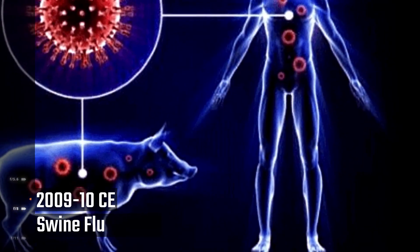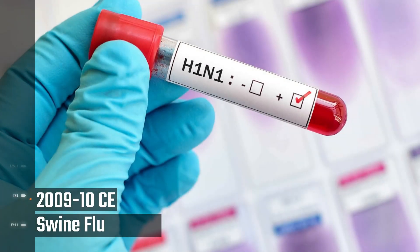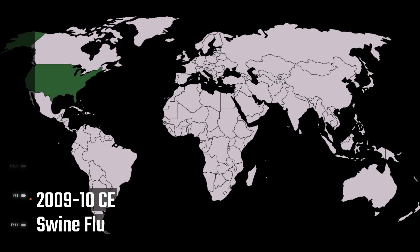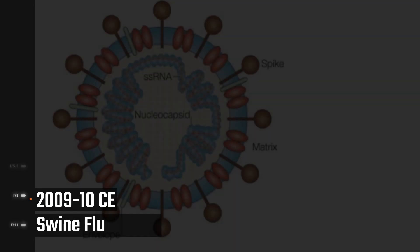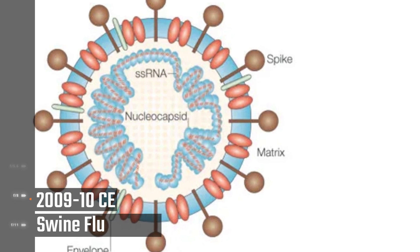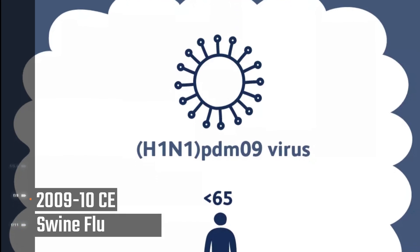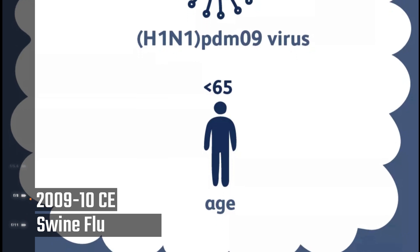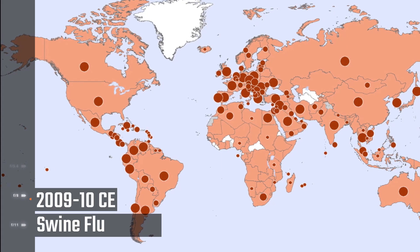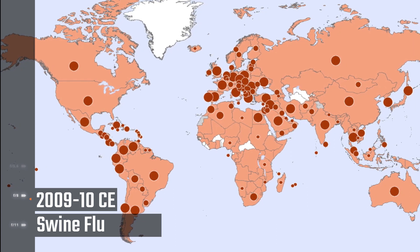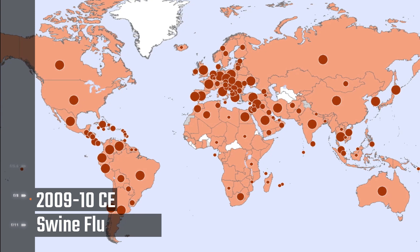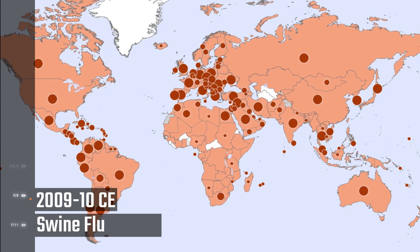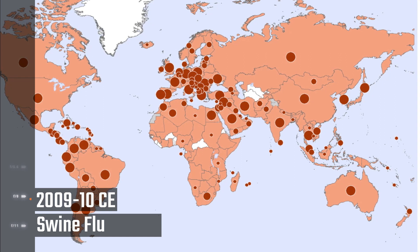Swine Flu, 2009 to 2010. The flu strain responsible for the outbreak — influenza A H1N1pdm09 — was first detected in America in April 2009. It represented a unique combination of influenza viruses never before seen in humans or animals. The virus quickly spread globally, primarily affecting children and adults under 65 who lacked immunity to H1N1. The WHO declared the swine flu outbreak a pandemic on June 11, 2009, and declared an end to the pandemic on August 10, 2010. Globally, an estimated 151,700 to 575,400 people died from swine flu in the first year.